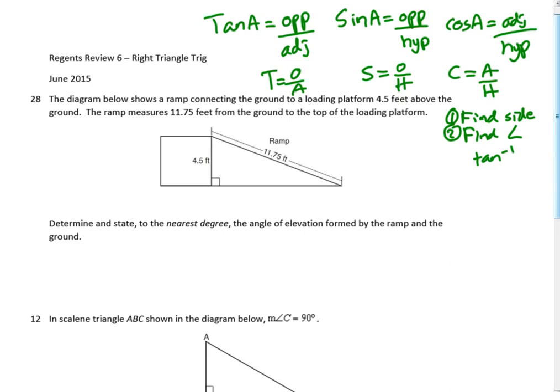This is June 2015. The diagram below shows a ramp connecting the ground to the loading platform 4.5 feet above the ground. The ramp measures 11.75 feet from the ground to the top of the loading platform. Determine and state to the nearest degree the angle of elevation formed by the ramp and the ground. So I'm going to call this angle X, and we need to recognize we have a right triangle and we're looking for an angle, so this is a trig question.